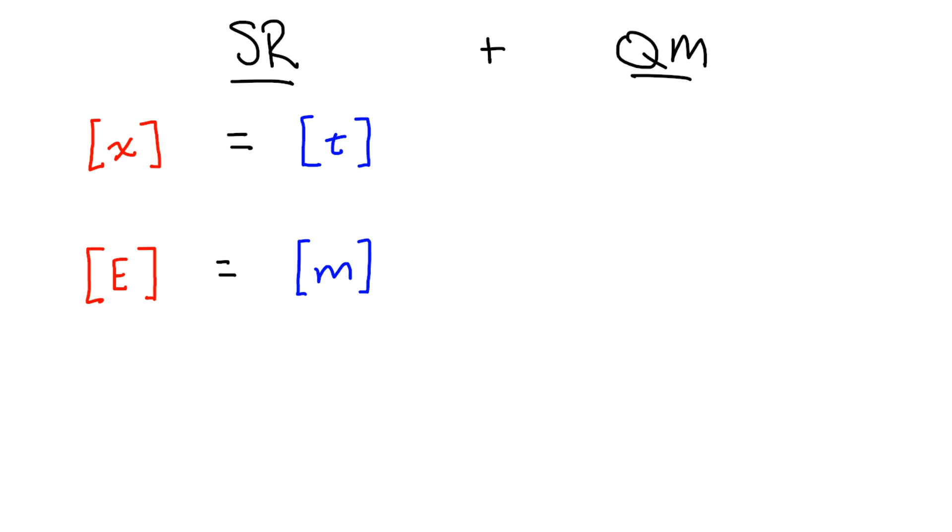To see this, let's consider the Heisenberg uncertainty relation between energy and time. Without diving too deep into the relation itself, we can see that on the right hand side when we take h bar to 1, we get a dimensionless number. This tells us that the product of energy and time on the left hand side has to also be dimensionless. So we can conclude that the units of time have to be the inverse of the units of energy.